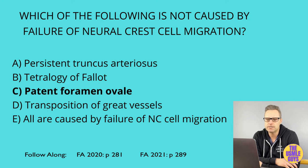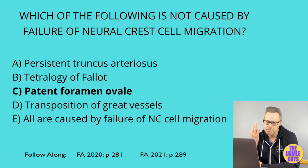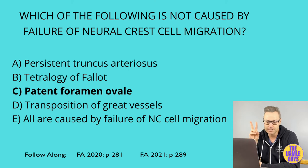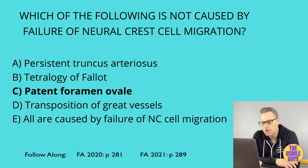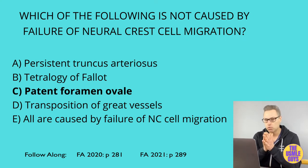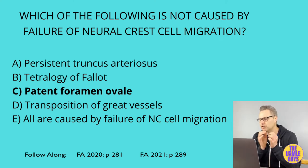The correct answer here is C. As a continuation of atrial development, we have the ventricles, for which we have three main steps to know. Step one is the formation of the interventricular septum; the opening that forms during this process is known as the interventricular foramen. In step two, the aorticopulmonary septum rotates and fuses with the muscular ventricular septum to form the membranous interventricular septum, leading to closure of the interventricular foramen. In step three, we see growth of the endocardial cushions, which separates the atria from the ventricles and contributes to atrial septation and the membranous portion of the interventricular septum.